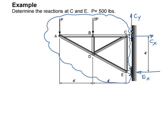Okay, well, since we have two unknowns up here at C, let's go ahead and start by taking moments about C. So we have, over here at B we have 2P. So let's see, that's 2 times 500, because P is 500. And the perpendicular distance is 4 feet.